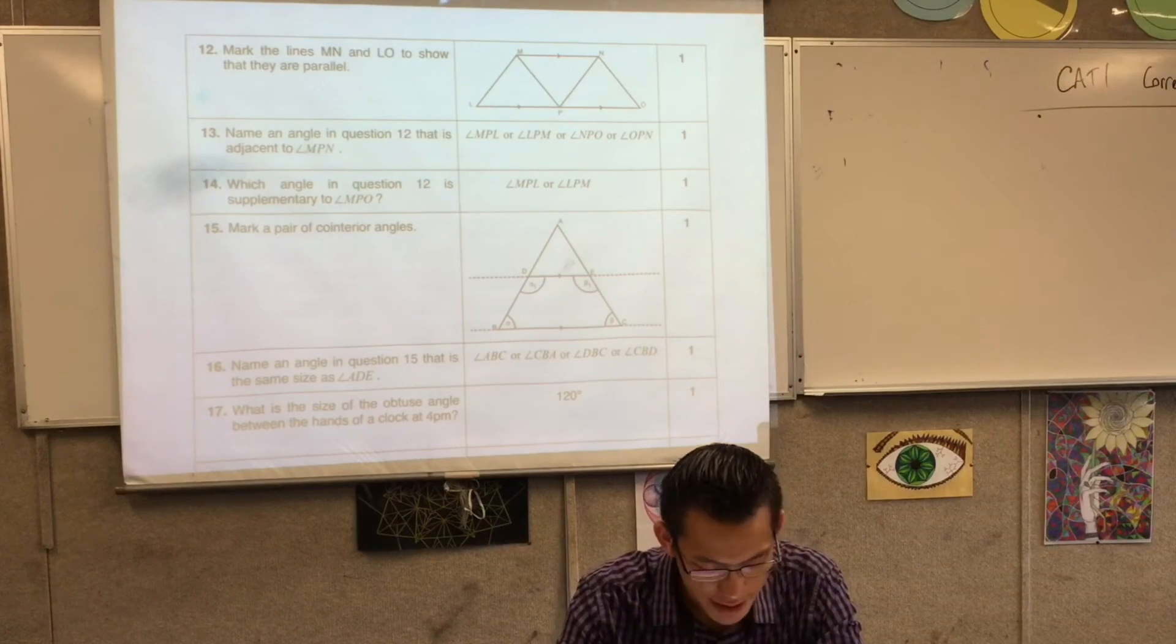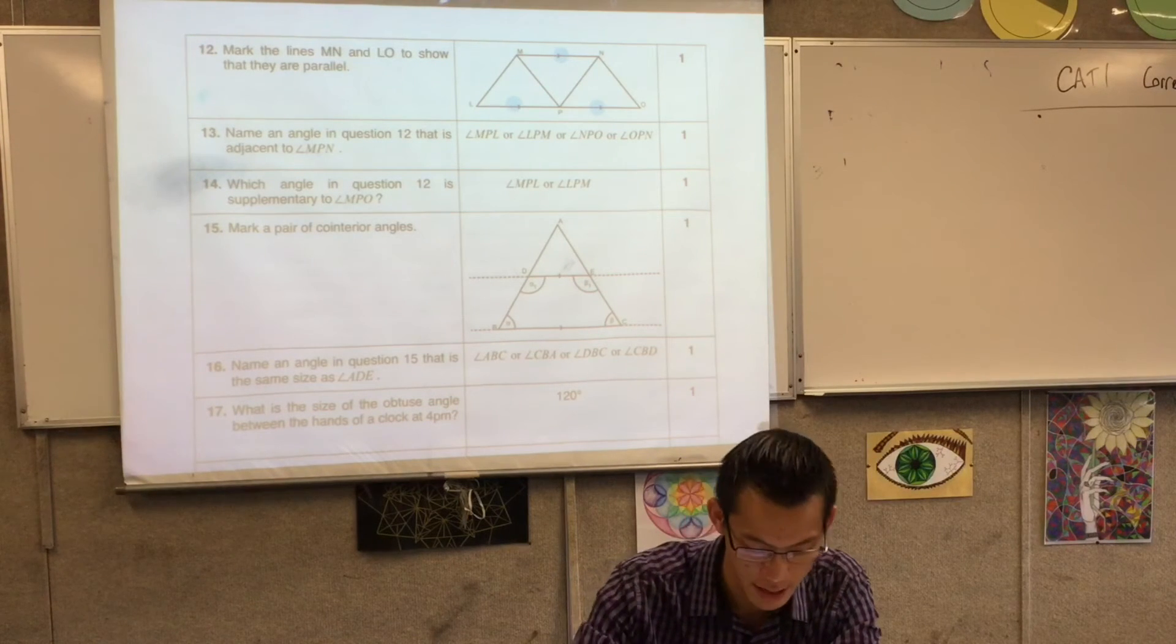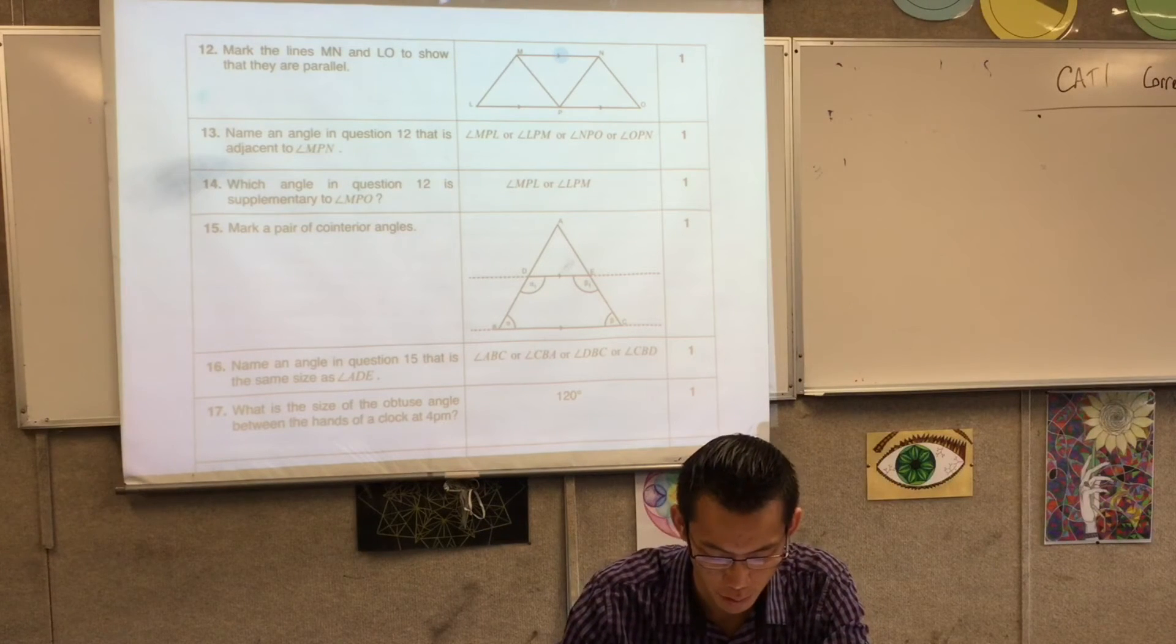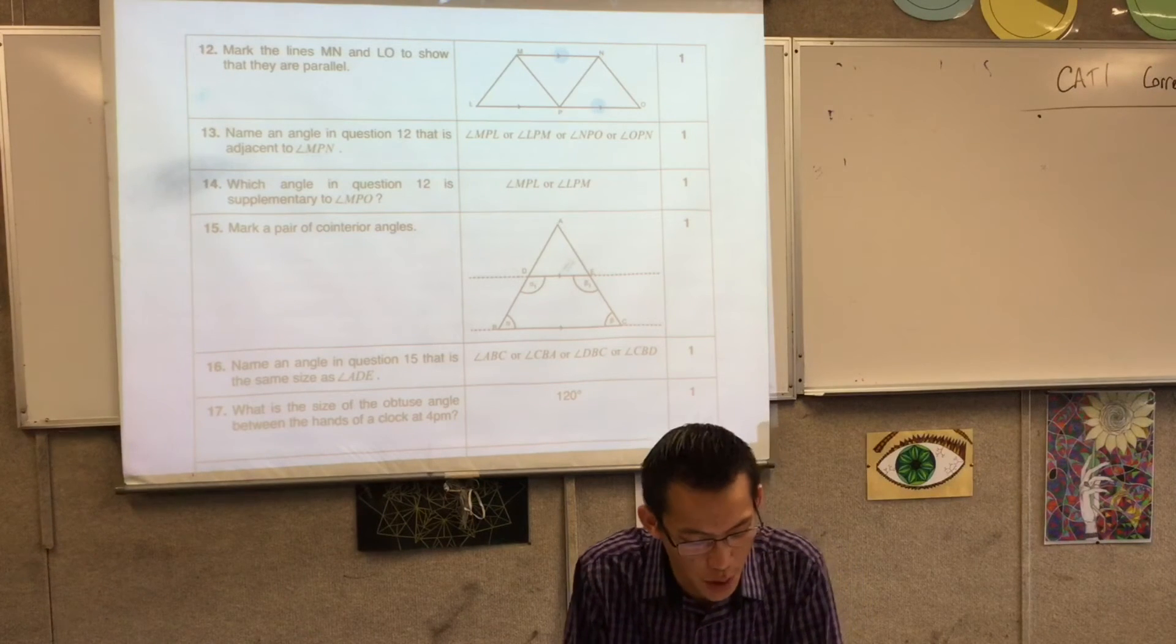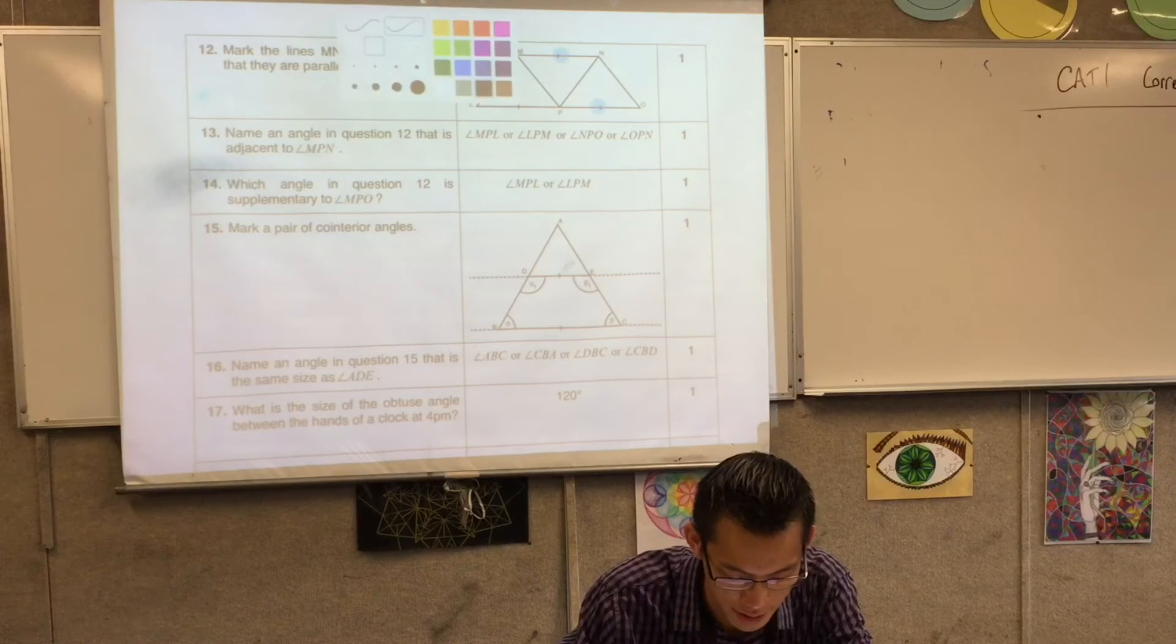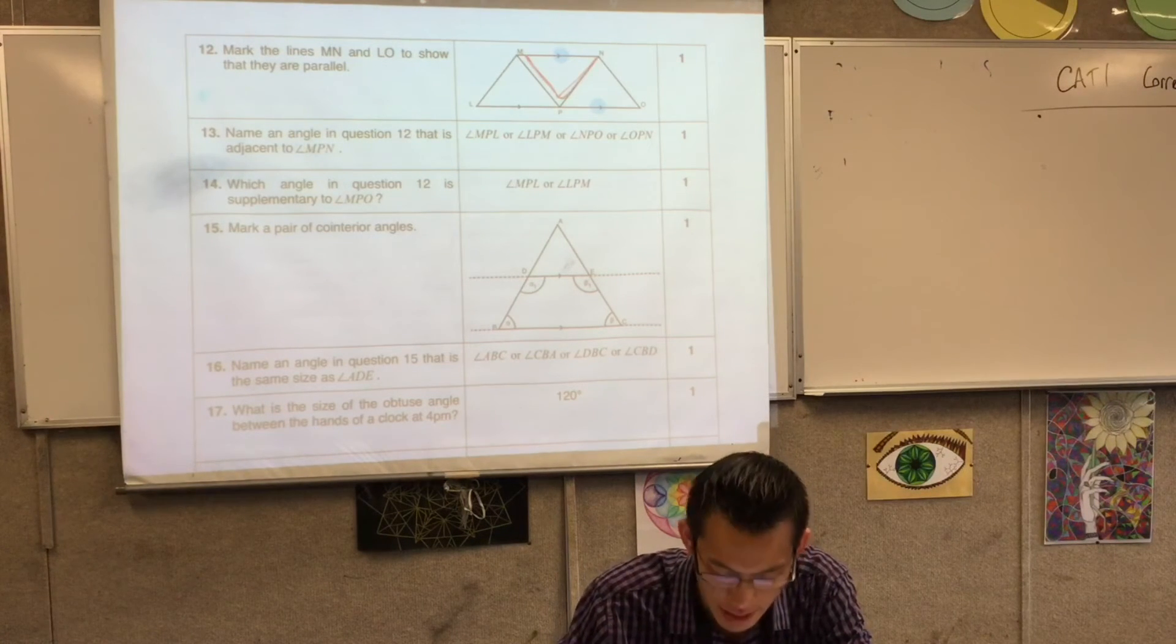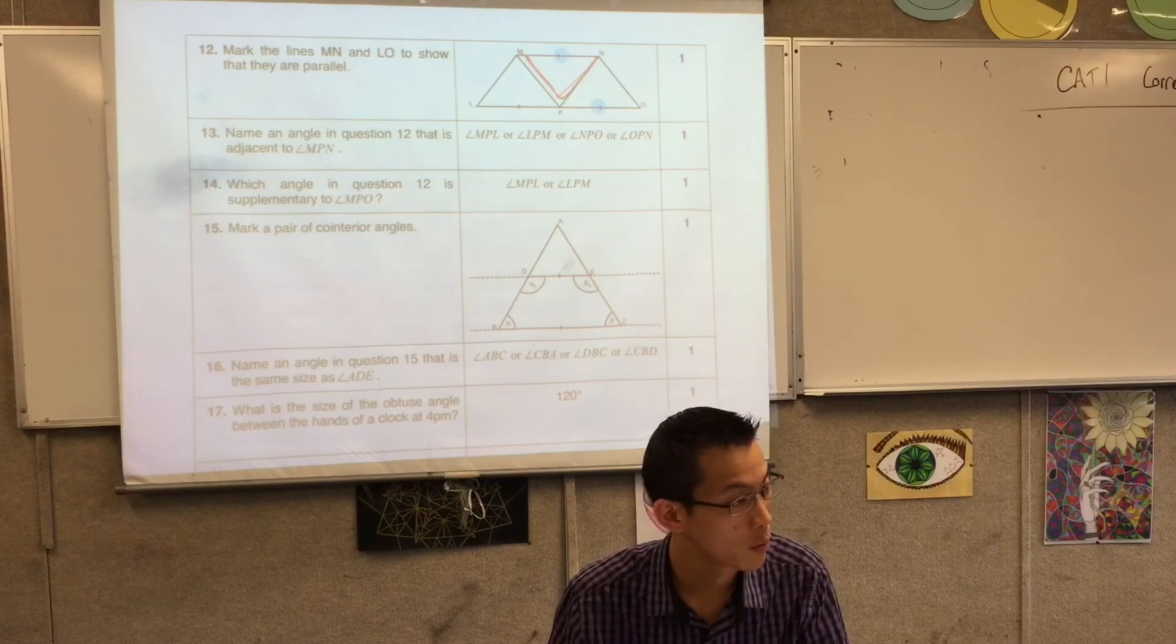Mark the lines MN and LO to show that they're parallel. So we were looking for these arrows here. You didn't need to have three. If you just had two of them, that was fine. You could put them there or you could put them there. Name an angle on question 12 that's adjacent to MPN. So here is MPN right here. That's this angle. So that's why you had some choices as to which one you wanted to say was adjacent to that.